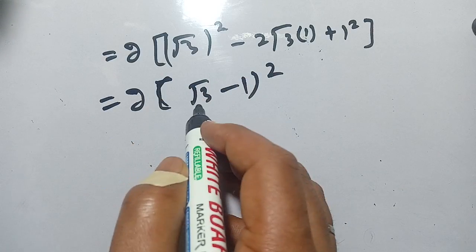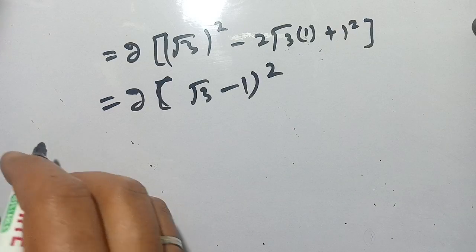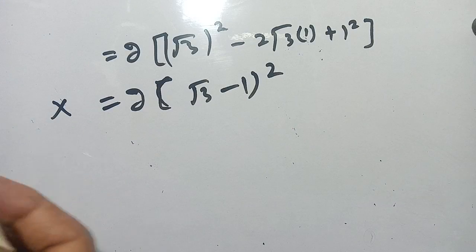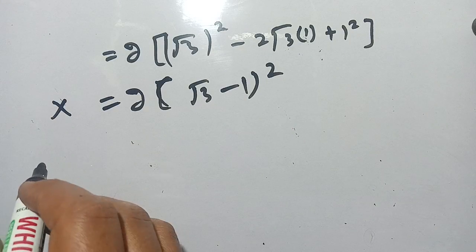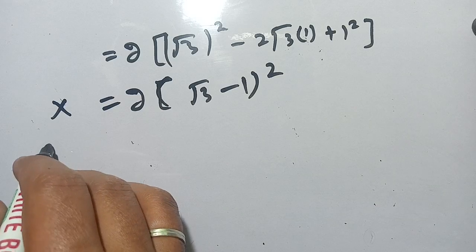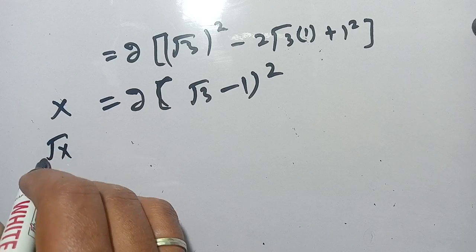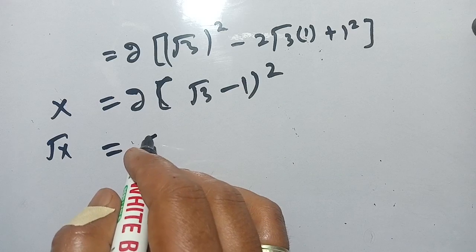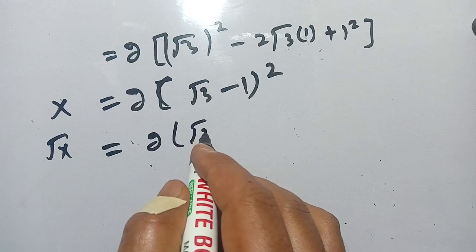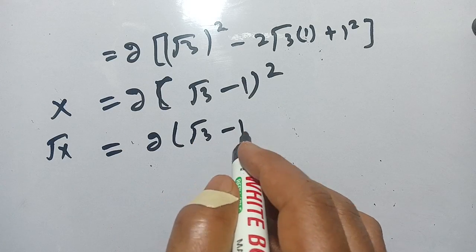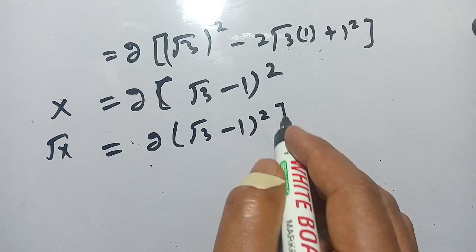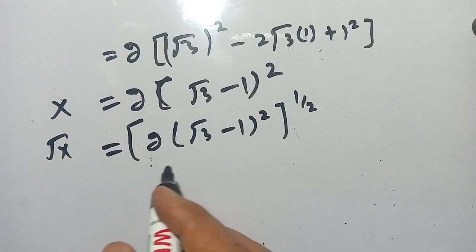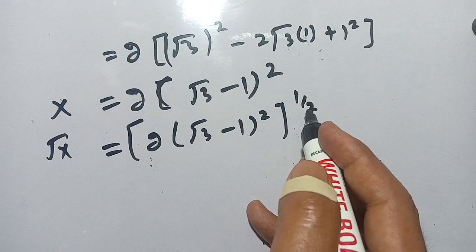So in the next step we can write x as 2 times (square root 3 minus 1) squared. This is the value of x, but we need to find the value of square root of x. Square root of x equals 2 times (square root 3 minus 1) squared, all raised to the power of 1 divided by 2.